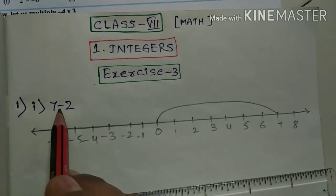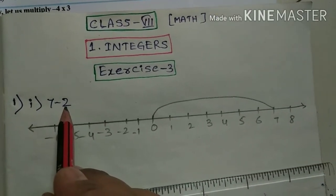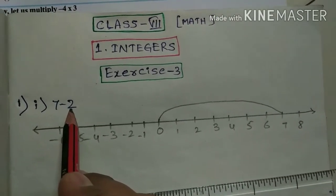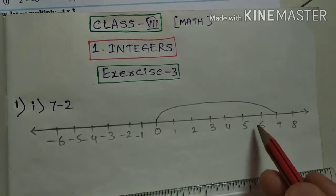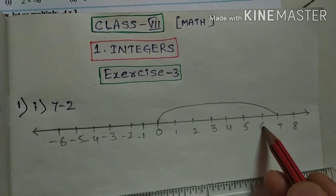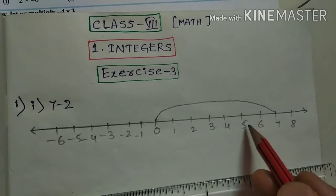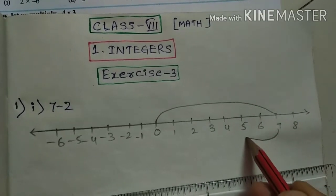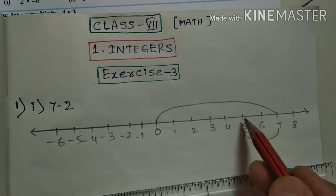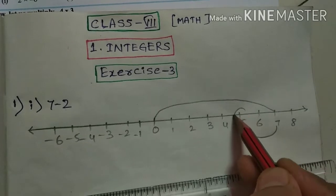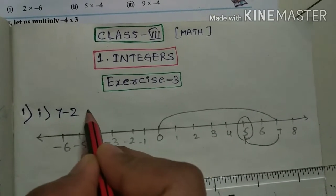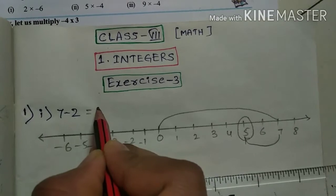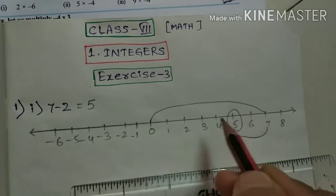After that, here we are subtracting a positive integer. So when we are subtracting a positive integer, we move to the left side of the number line. Count here — left side of 7: 1, 2. Like this, draw an arrow and circle the answer. So here 7 minus 2 — we know the answer directly is 5. So 5 is correct.